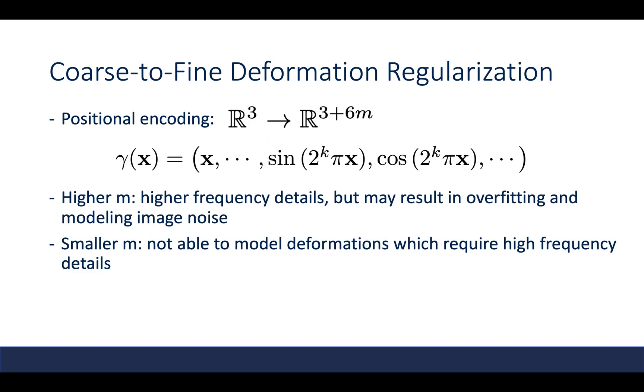Another important aspect of NeRF is the positional encoding, which maps a point in R³ to a point in R³⁺⁶ᴹ, where M is the frequency band. We know that higher M can model higher frequency details, but may result in overfitting and modeling image noise. While having a smaller M, the model might not be able to model deformations which require high frequency details.